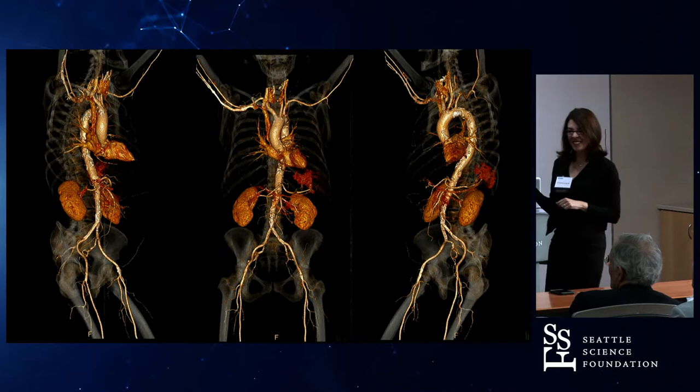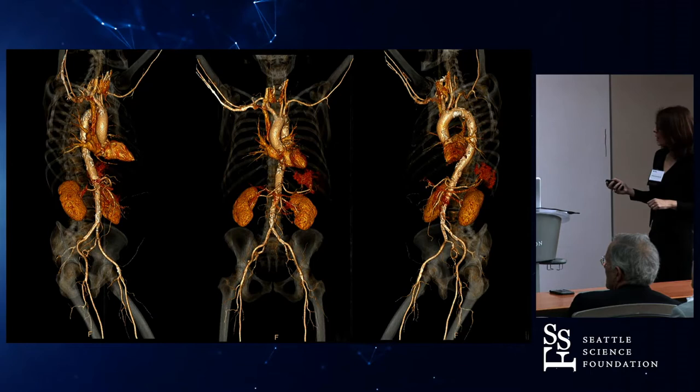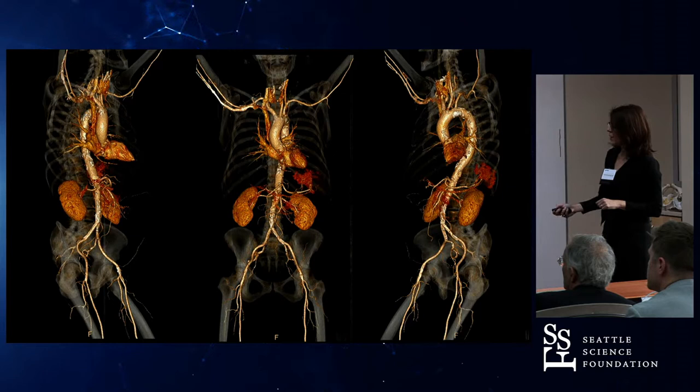So this is just a CT scan. These are the kind of images we can generate from a CT scan. You can see the aortic arch right here, the aortic root — and there's some calcium there — the descending thoracic aorta, abdominal aorta. Then you've got your iliac arteries and femoral arteries.